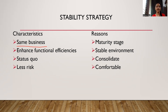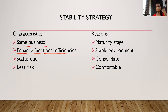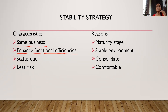Next feature is that it enhances functional efficiencies. When a firm wants to be stable in its objectives, products, and business, it needs to be very efficient. Because if they lose their efficiencies, they're likely to go down. Similarly, if a business wants to stay stable — in the same position — then they have to be very efficient as well as effective.